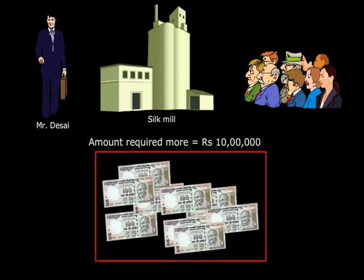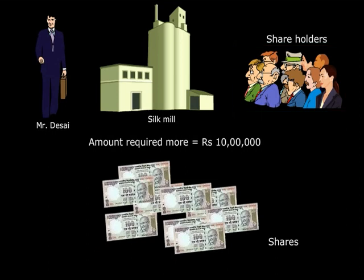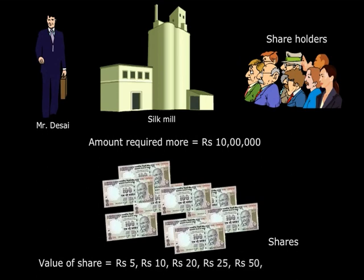These smaller parts are known as shares, and all the people who purchase the shares of this mill are called shareholders. Now a share can have any value — let's say rupees 5, rupees 10, 20, 25, 50, 100, 500 or more.